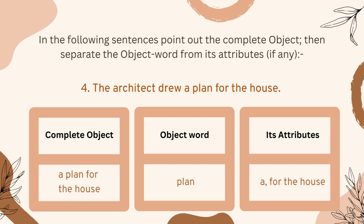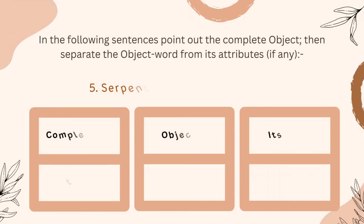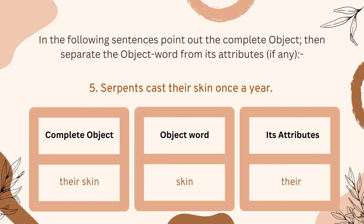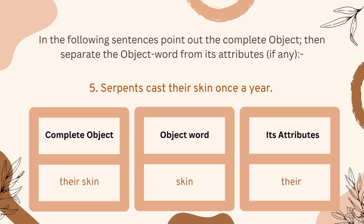Number five: 'Serpents cast their skin once a year.' In this sentence, 'their skin' is the complete object. 'Skin' is the object word, and 'their' is used as an attribute.